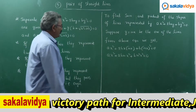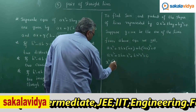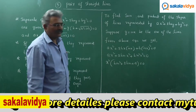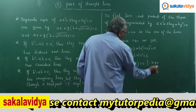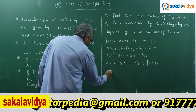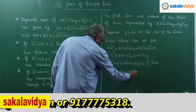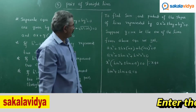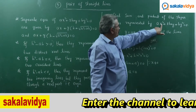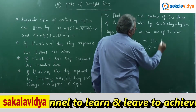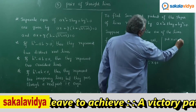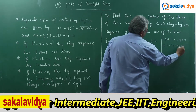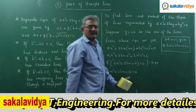Taking x² common from the left-hand side (since x ≠ 0, x² ≠ 0), we get bm² + 2hm + a = 0. There is also a shortcut technique: whenever y = mx, wherever you see x put 1 and wherever you see y put m, and you directly get bm² + 2hm + a = 0. This is useful for entrance examinations.